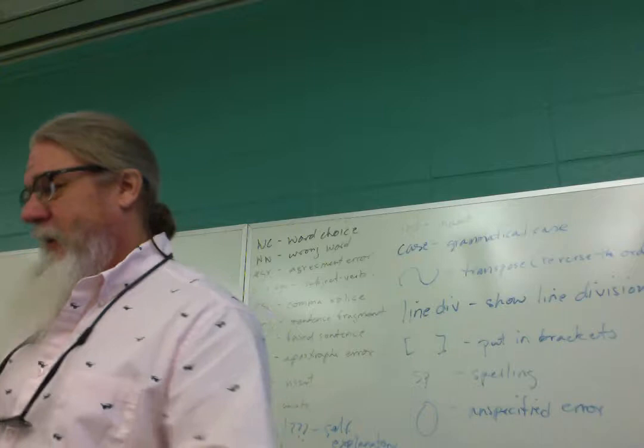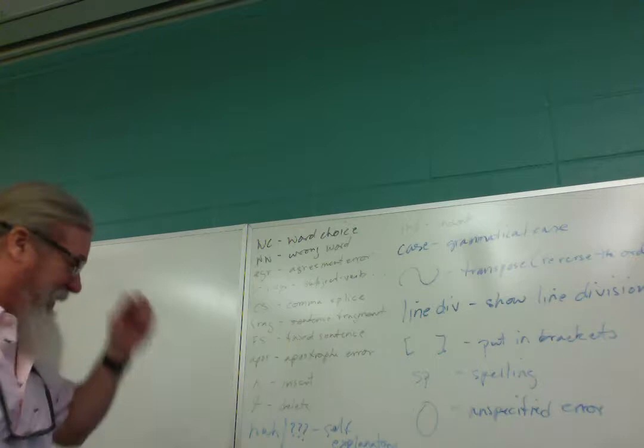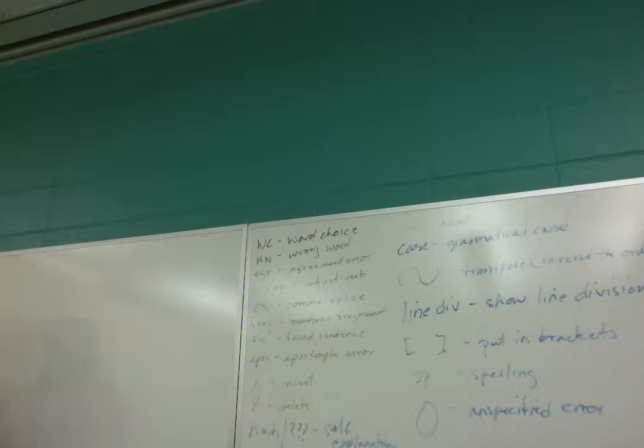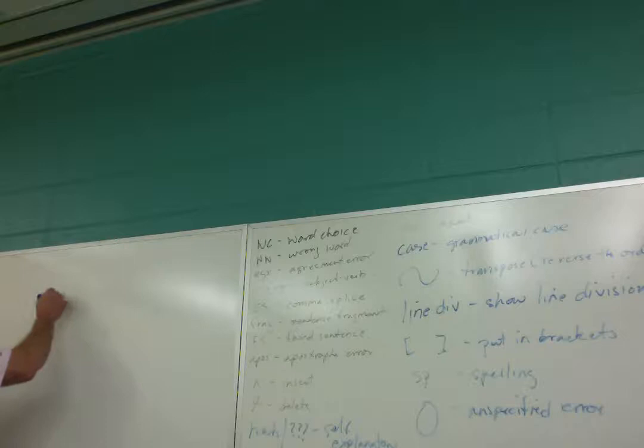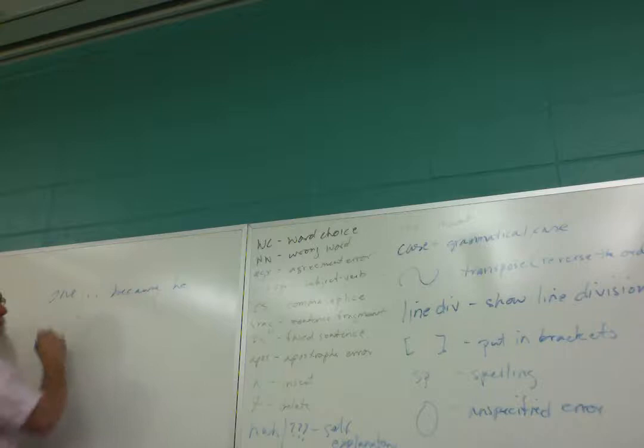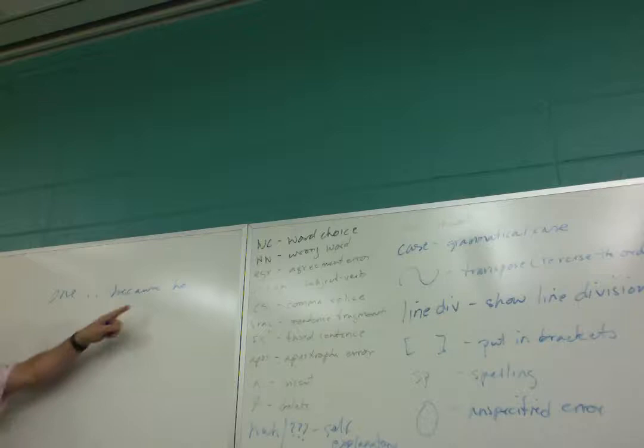You're writing along and you say, 'One should think love and reason are not connected,' then follow it with 'because he...' — that's an agreement error. 'One' is non-specific; 'he' is specific. That's one kind of agreement error. If you're going to use 'one' and want to be non-sexist, just use 'one' all the way through.